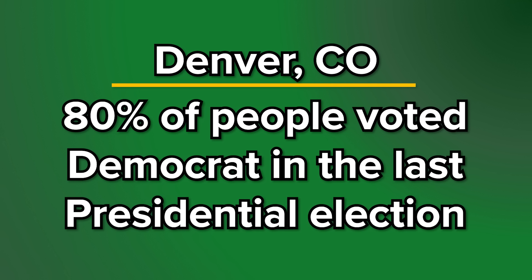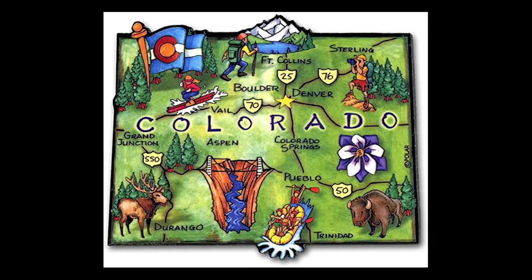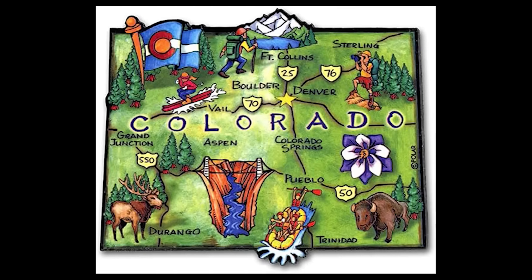Just so you understand the context, Denver is a very liberal district — 80% of people voted Democrat in the last presidential election. These six people are saying that they want to take away the rights of everyone else in Colorado to vote for Trump so that they don't have to see his name on the ballot. Who else is involved in this case? The judge is named Sarah B. Wallace.